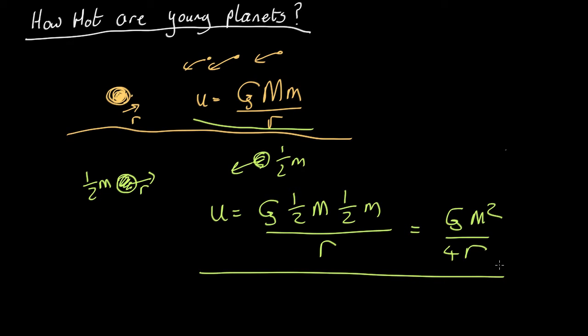Now if we substitute in the mass of Jupiter, which is 2 times 10 to the 27 kilograms, gravitational constant 6.67 times 10 to the minus 11, and we substitute in the radius of Jupiter, which is 7 times 10 to the 7 meters, we end up with an energy of about 10 to the 36 joules.